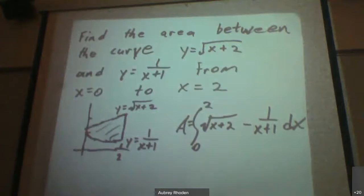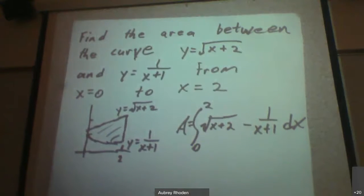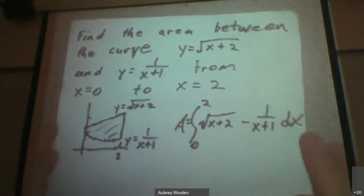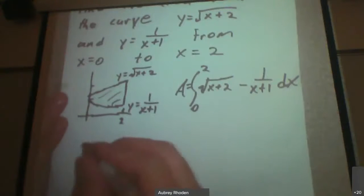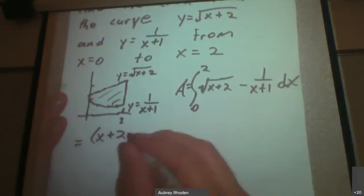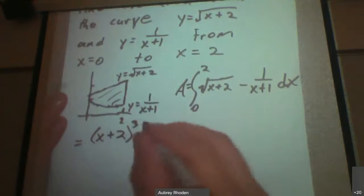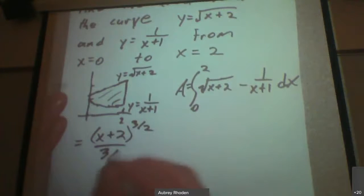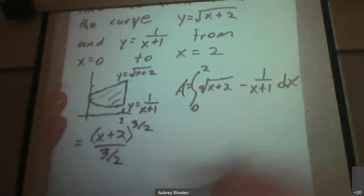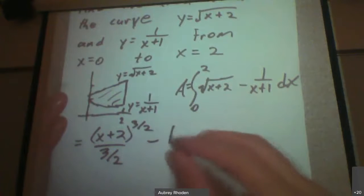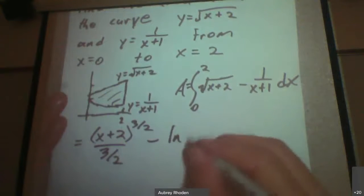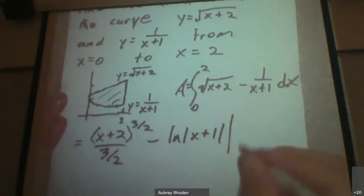All right, now when I integrate these things, so we integrate the square root of x plus two. This becomes x plus two raised to three divided by two divided by three divided by two and minus the natural log. I don't always use absolute value signs, but we'll use it in this case. And these are going to be evaluated at zero and at two.